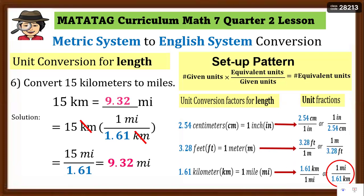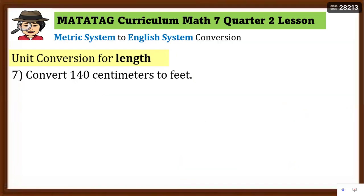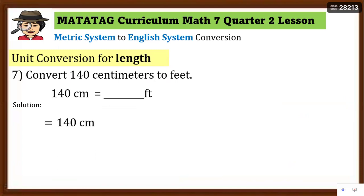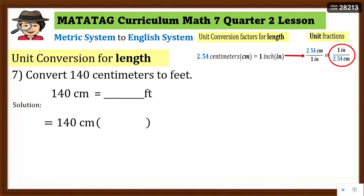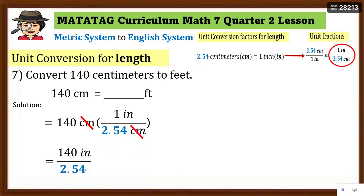So 9.32 miles ay may katumbas na 15 kilometers. Number seven: convert 140 centimeters to feet. Write the equation and set a pattern. Take note — wala tayong direct conversion from cm to feet, ibig sabihin magdadalawang conversion unit tayo. We have to use the unit fraction one inch over 2.54 centimeter — cancel 'centimeter,' multiply one inch times 140, divide by 2.54 — equals 55.12 inches (rounded to two decimal places).